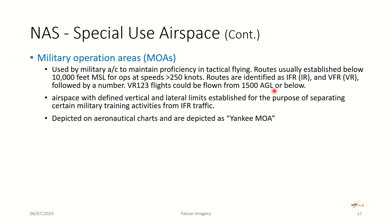Military operating areas, represented by magenta hash lines, are used for military aircraft to maintain proficiency in tactical flying. Routes are usually established below 10,000 feet MSL for operations at speeds greater than 250 knots, and are identified as IFR (IR) or VFR (VR) followed by a number — for example, VR-123 could be flown from 1,500 feet AGL or below treetop level. MOAs separate military traffic from IFR traffic but don't preclude VFR traffic, though you definitely want to know if the area is hot before entering.